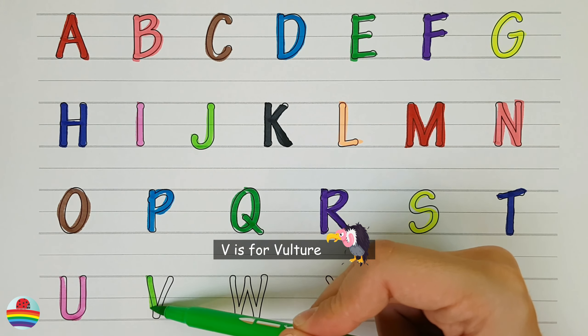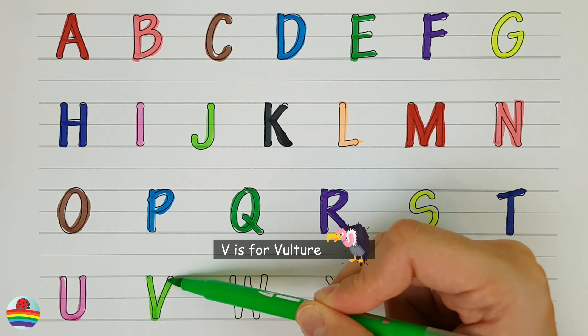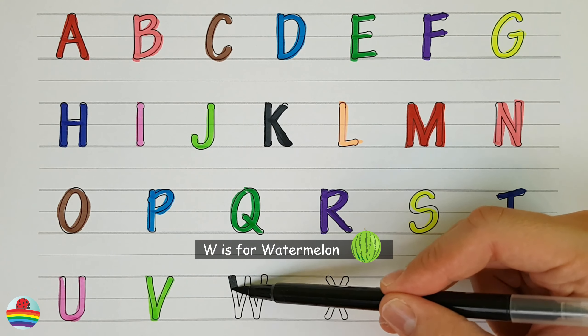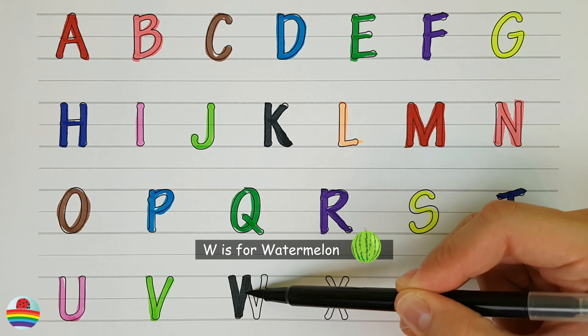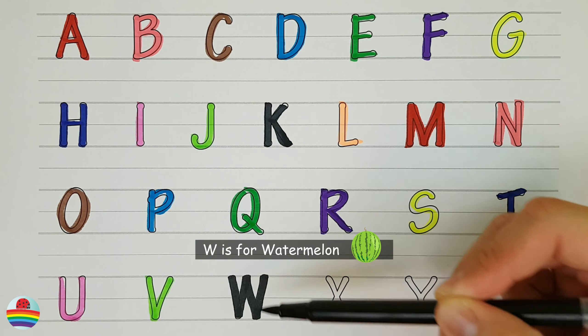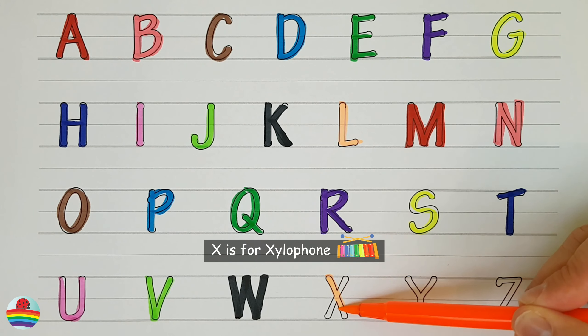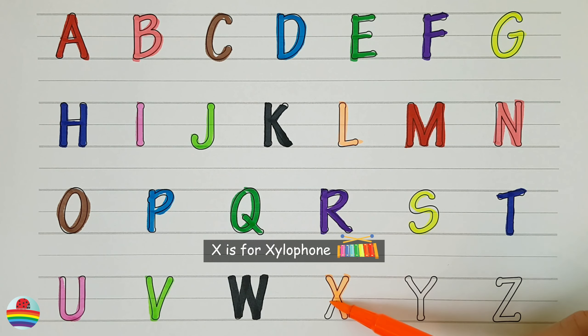V. V is for Vulture. V. W. W is for Watermelon. W. X. X is for Xylophone. X.